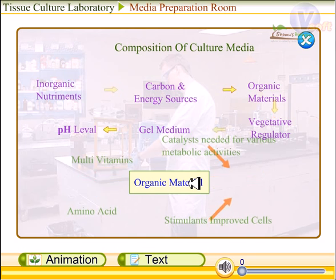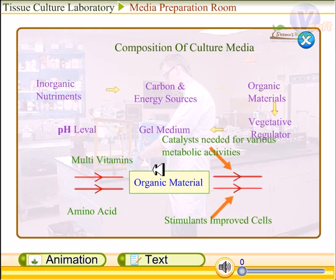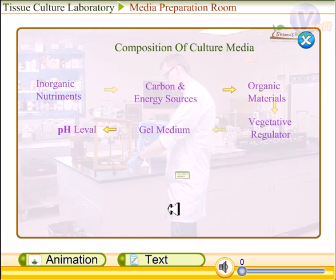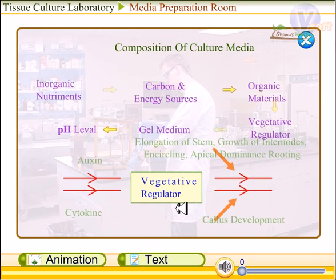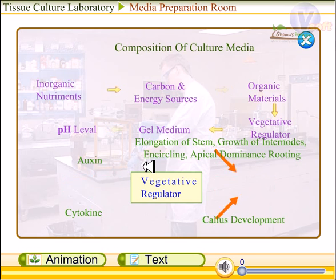The organic materials consist of multivitamins and amino acids. Multivitamins act as catalysts for various metabolic activities, and amino acids stimulate growth. The vegetative regulators include hormones such as auxin, which helps in elongation of the stem, growth of internodes, and apical dominance, while cytokinin is needed for callus development of the plant.